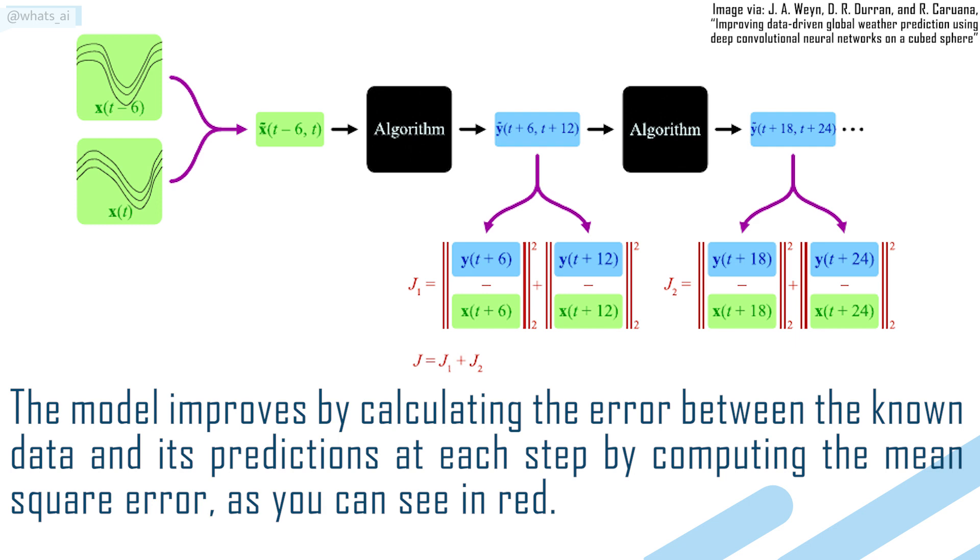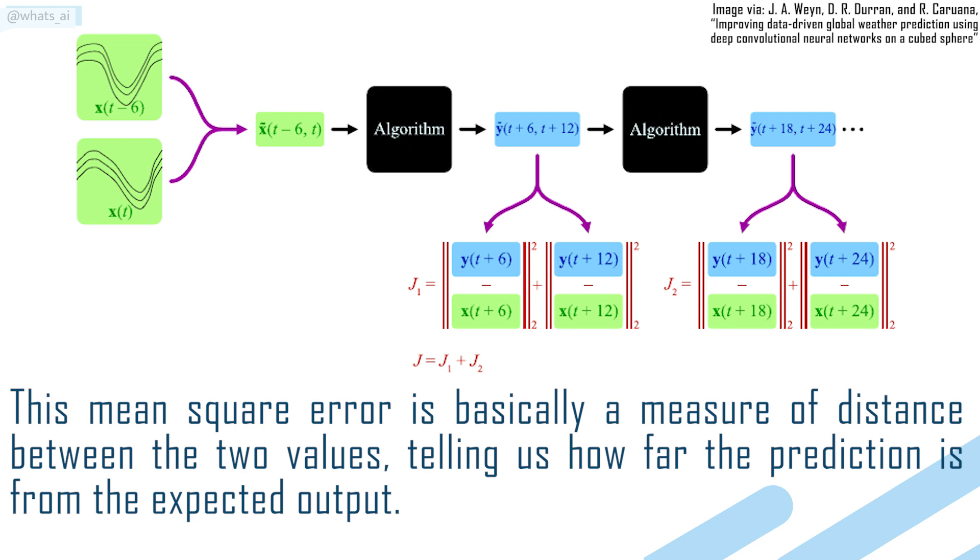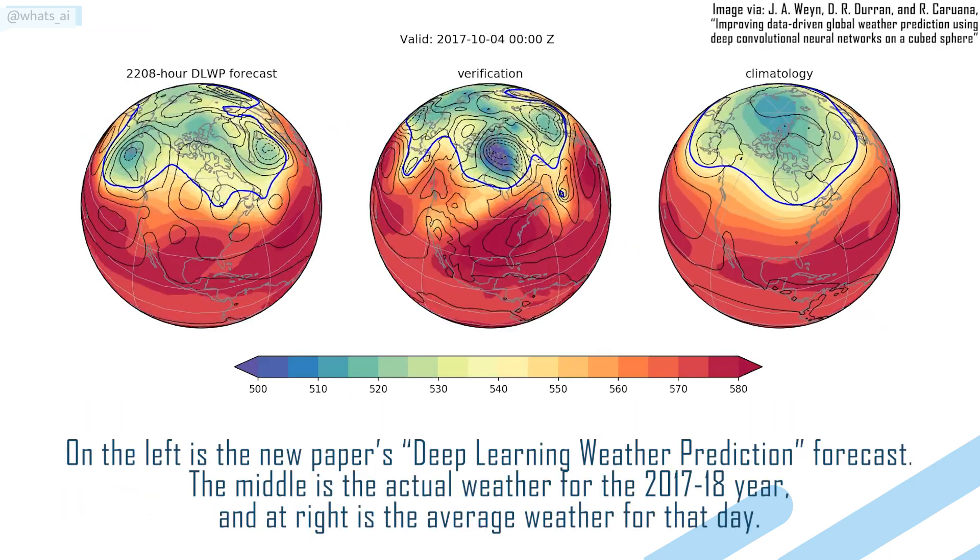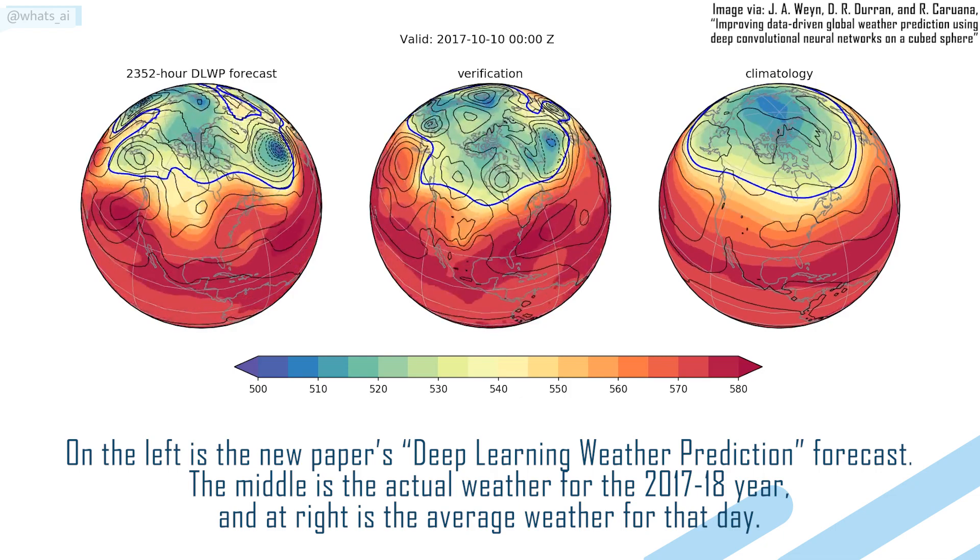The model improves by calculating the error between the known data and its predictions at each step by computing the mean square error, as you can see here in red. This mean square error is basically a measure of distance between the two values, telling us how far the prediction is from the expected output. The total error is just the sum of all these errors, and it is then minimized in the training phase to produce the best possible output for a medium-long range prediction. And here we have our final weather forecasts.